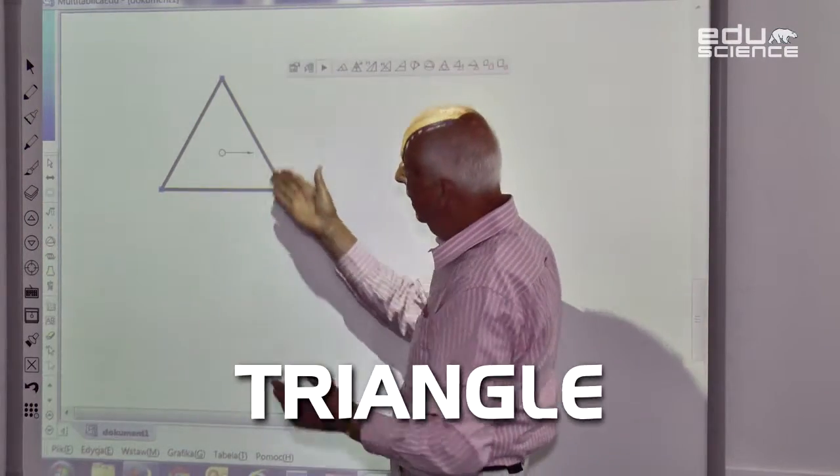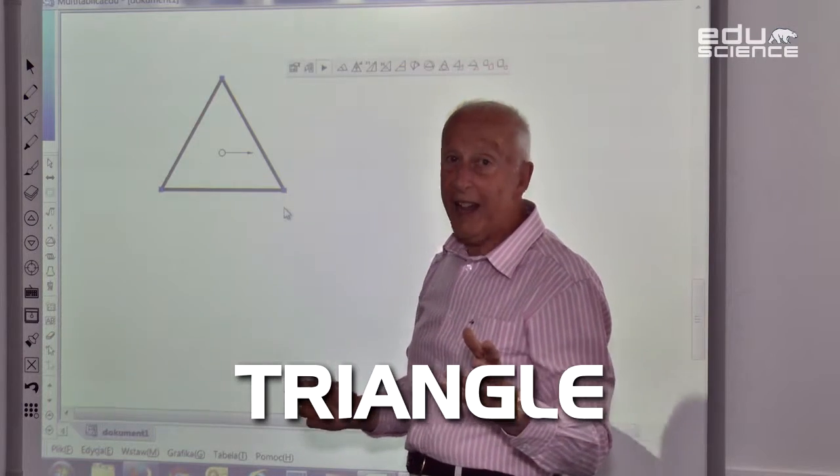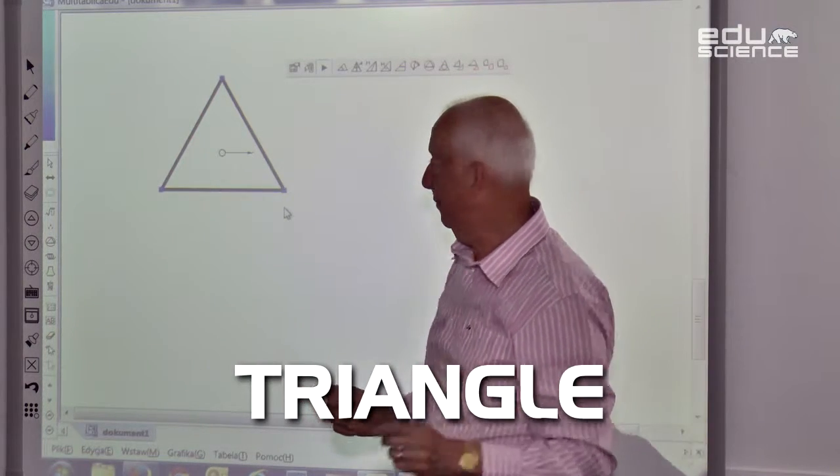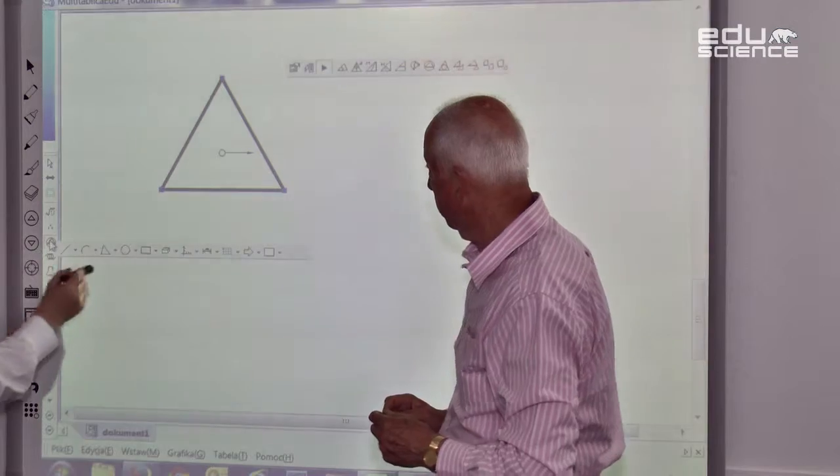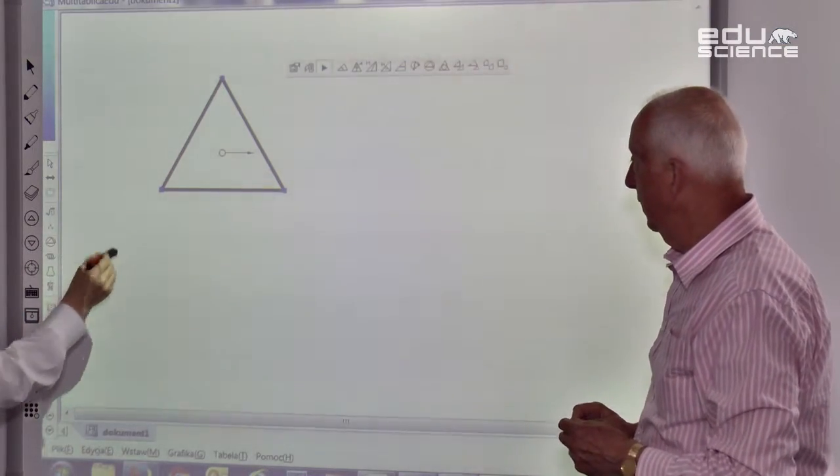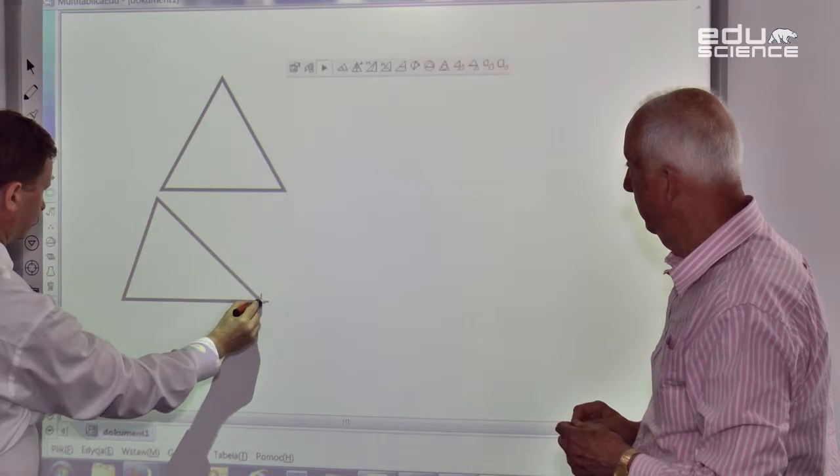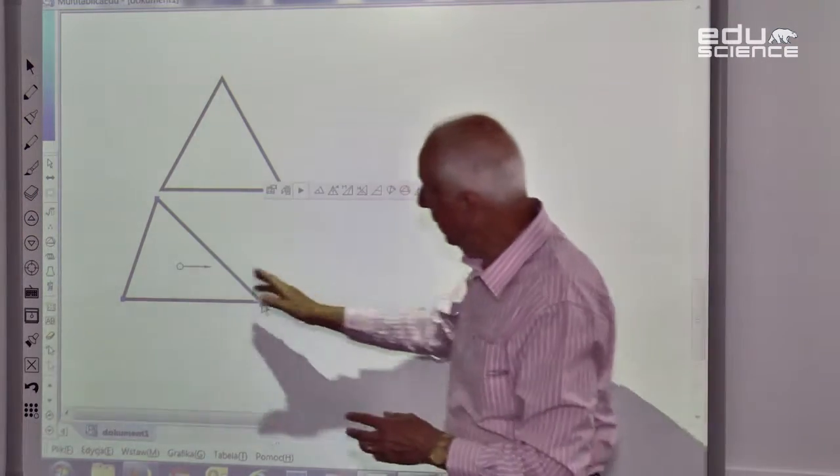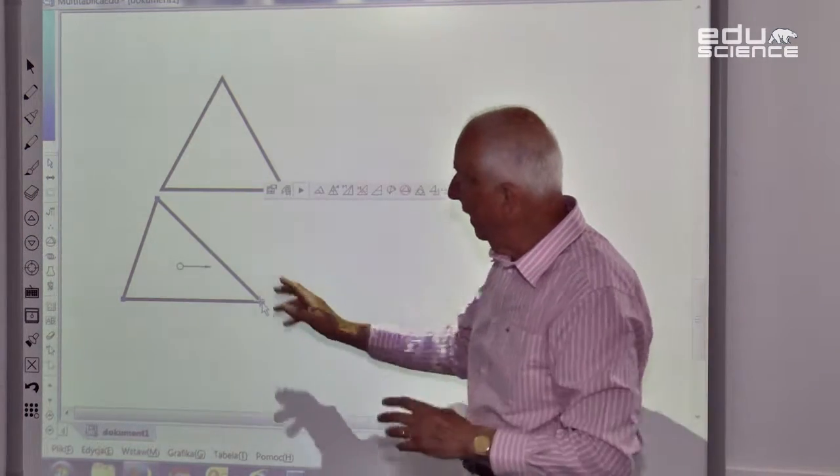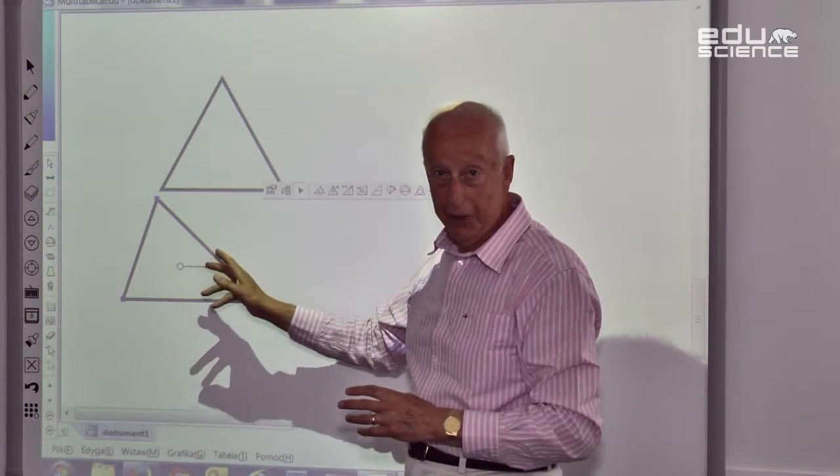Now we have a triangle and the triangle has three sides. Now we have a different shape of triangle.